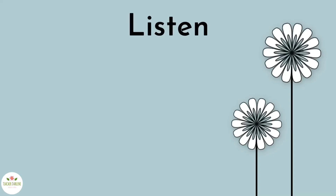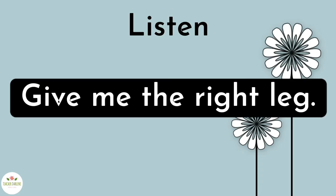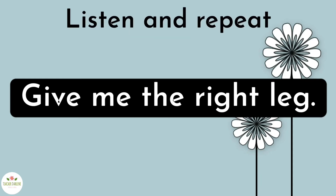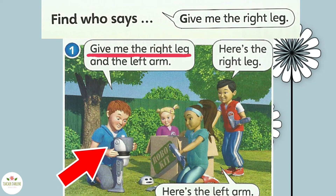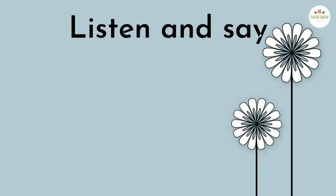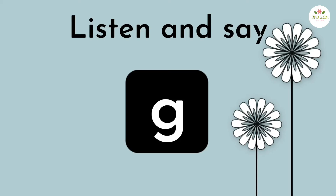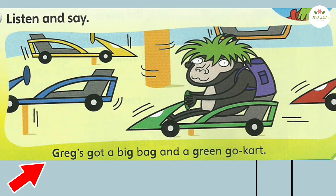Activity 3. Listen. Give me the right leg. Listen and repeat. Give me the right leg. Listen and say. Greg's got a big bag and a green go-cart. Greg's got a big bag and a green go-cart.